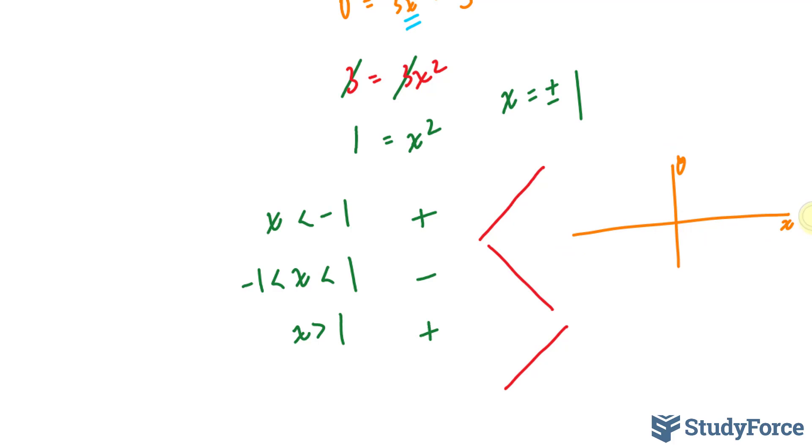As the function is getting bigger and bigger, when it reaches x is equal to negative 1, it was going up. And then finally when it reached x is equal to negative 1, it started to go down.